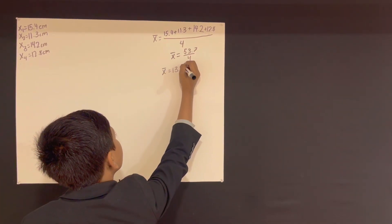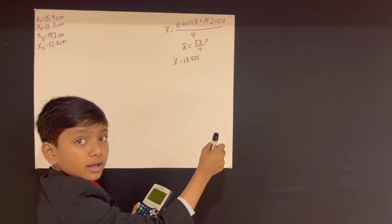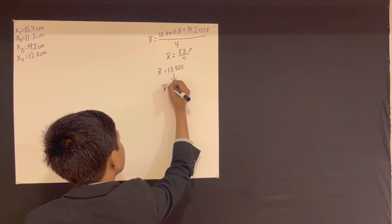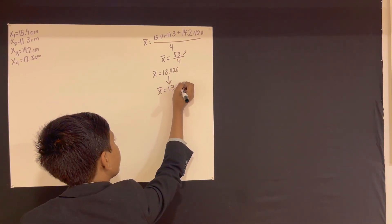Point four, two, five. But we have to round it up to three significant figures. So we're gonna have to make it 13.4.